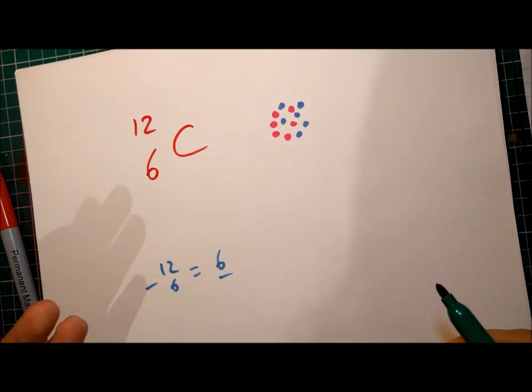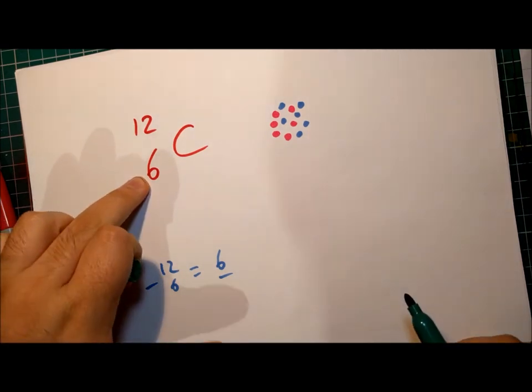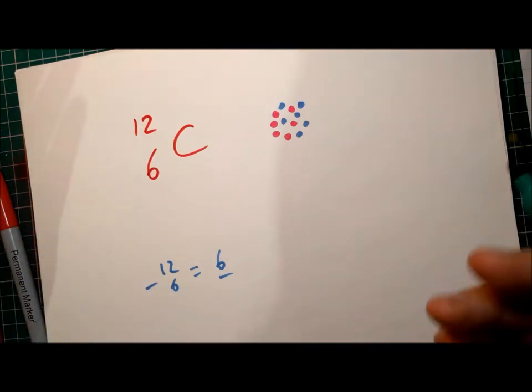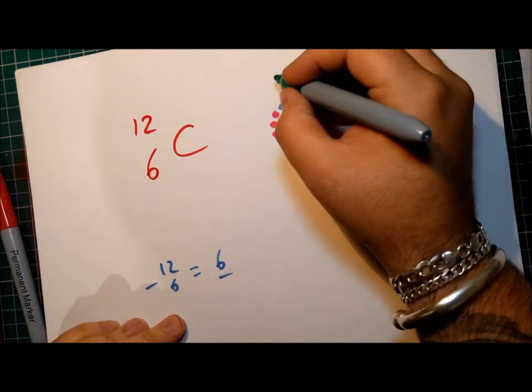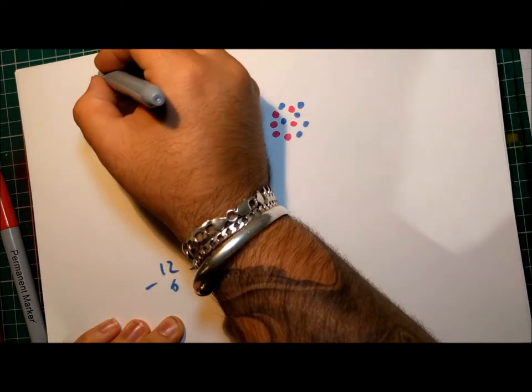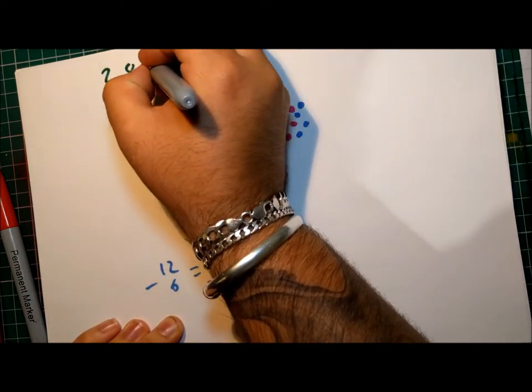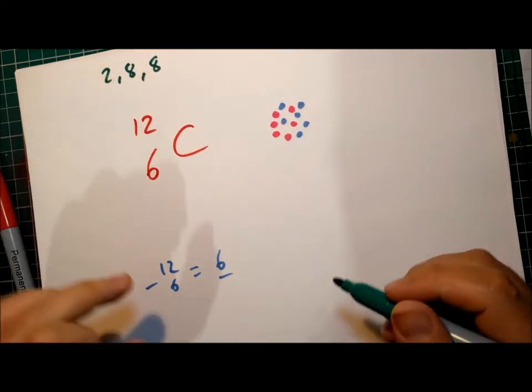Last but not least, how many electrons? Well, it has to be the same number as protons, so it's 6 electrons. That's good. And we know that that follows the 2, 8, 8 rule.